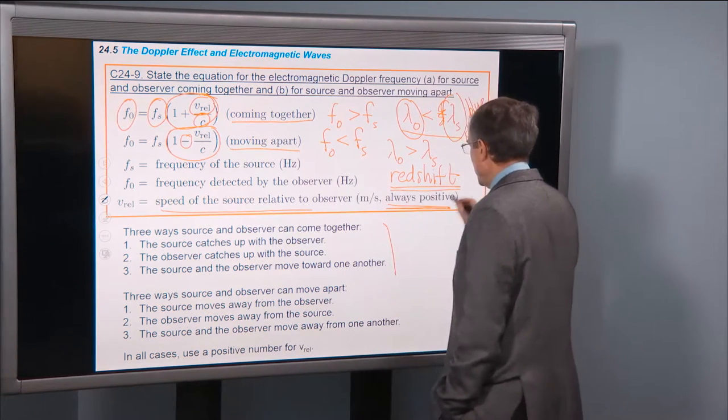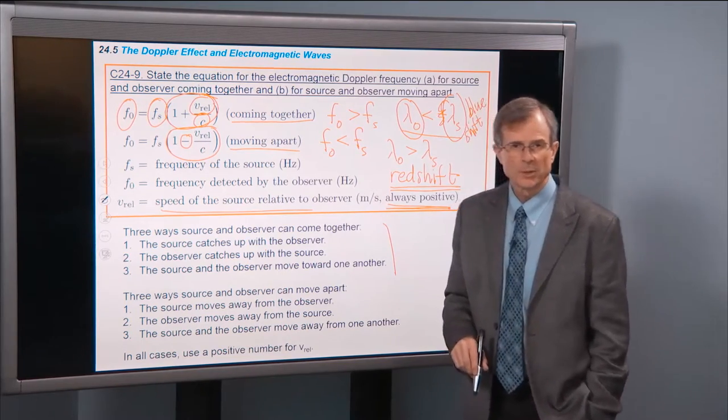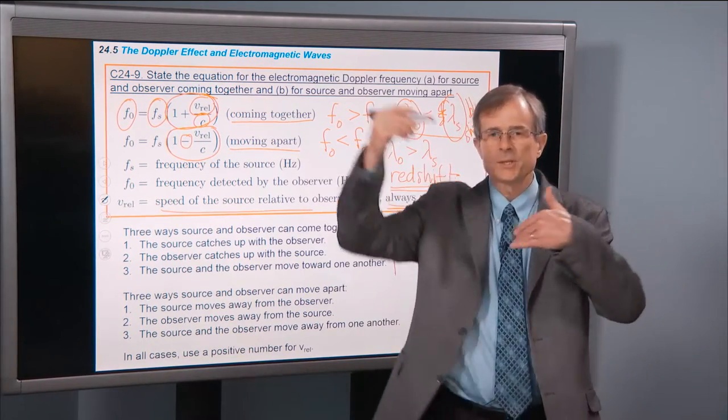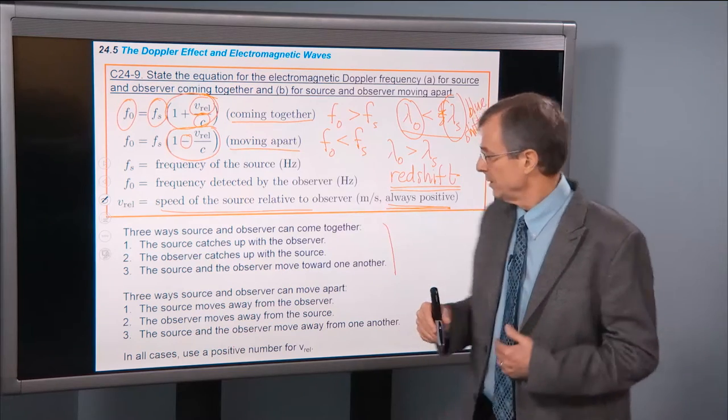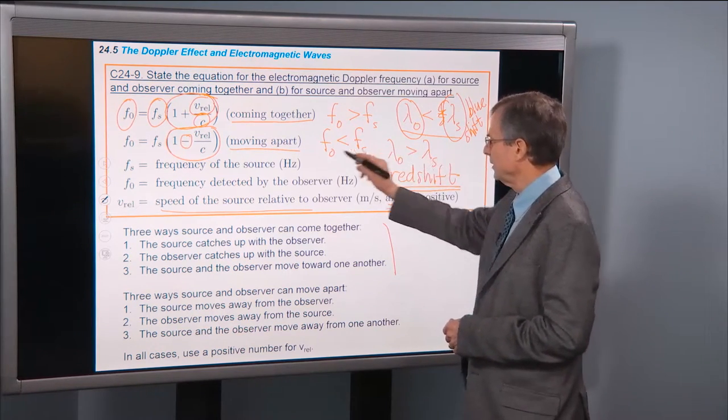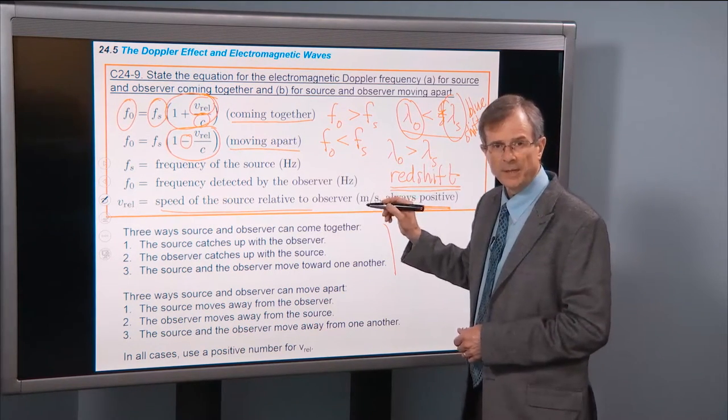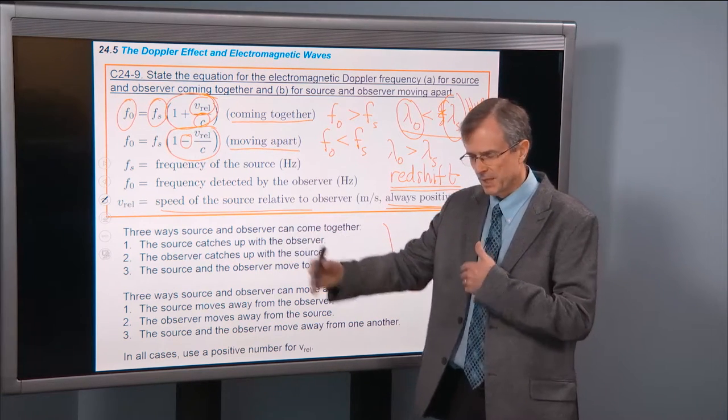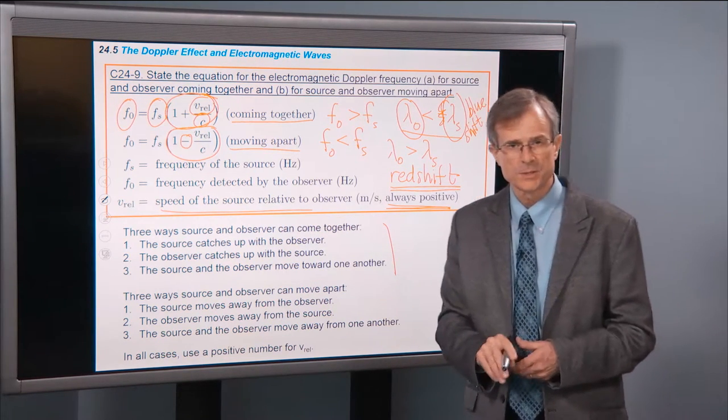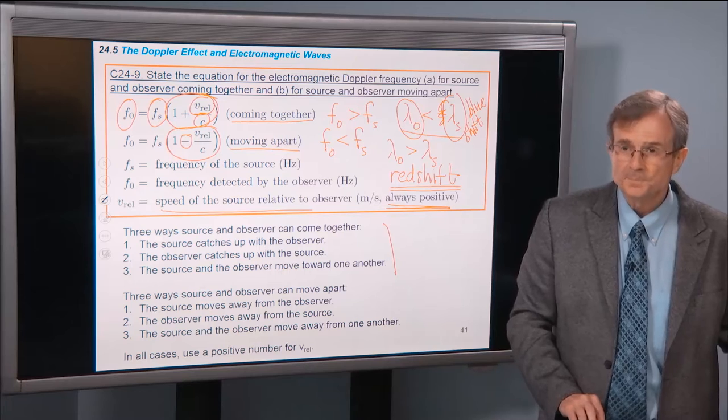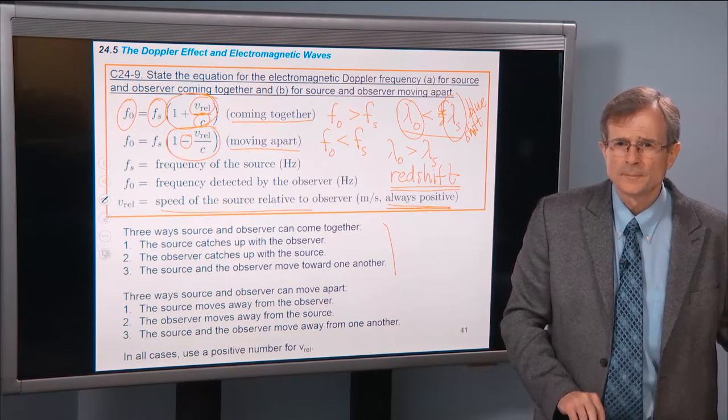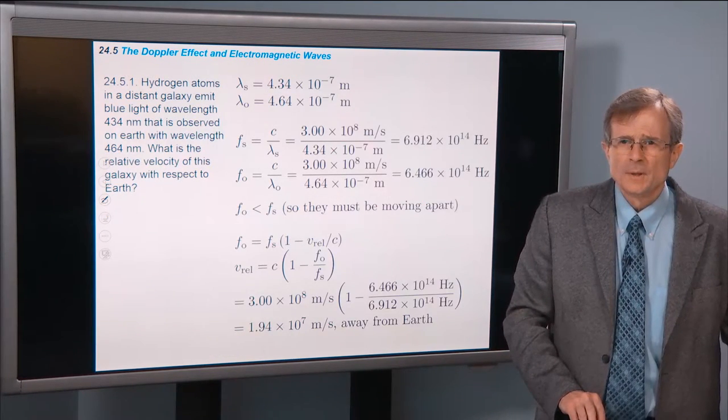And this redshift is what we observe in looking at objects that are far away from the Earth. We see this shift in frequency, lower frequency, higher wavelength for redshifted objects. And that allows us to determine distances.